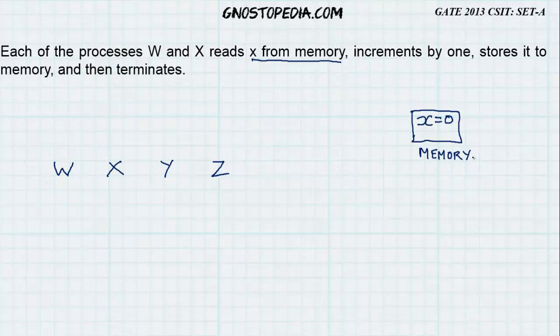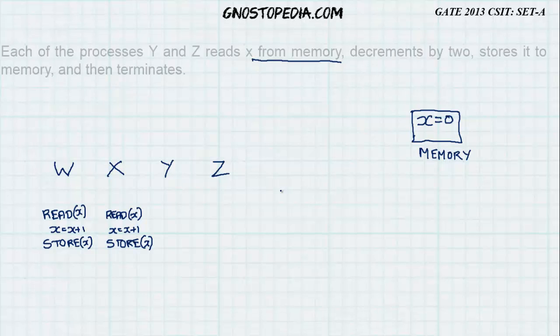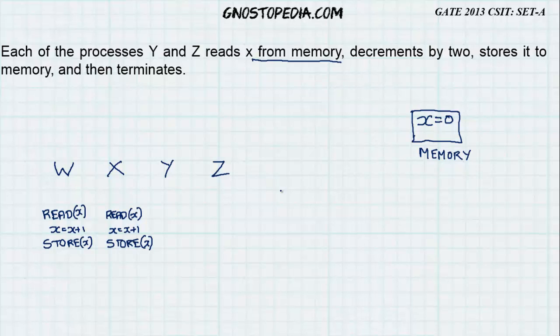W and X then increment it by one, store it to memory and then terminate. So if I would like to write it down, it would look something like this. Each of the processes Y and Z reads x from memory, decrements it by two and stores it to the memory and then terminates. So if I have to write that, it will look something like this.